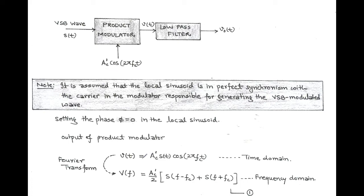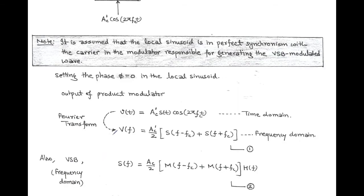For our simplicity, we take a frequency domain equation. For this, we take a Fourier transform of V function of T, and the frequency domain version of this equation is V(F) equals to AC' upon 2, within bracket S(F - Fc) plus S(F + Fc), which is obtained by using the frequency shifting property of the Fourier transform.